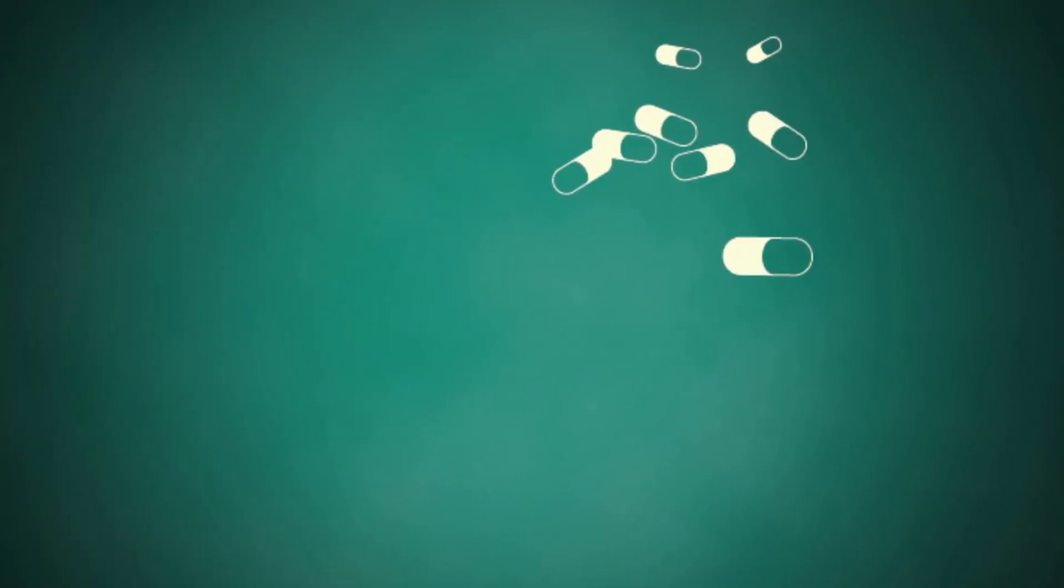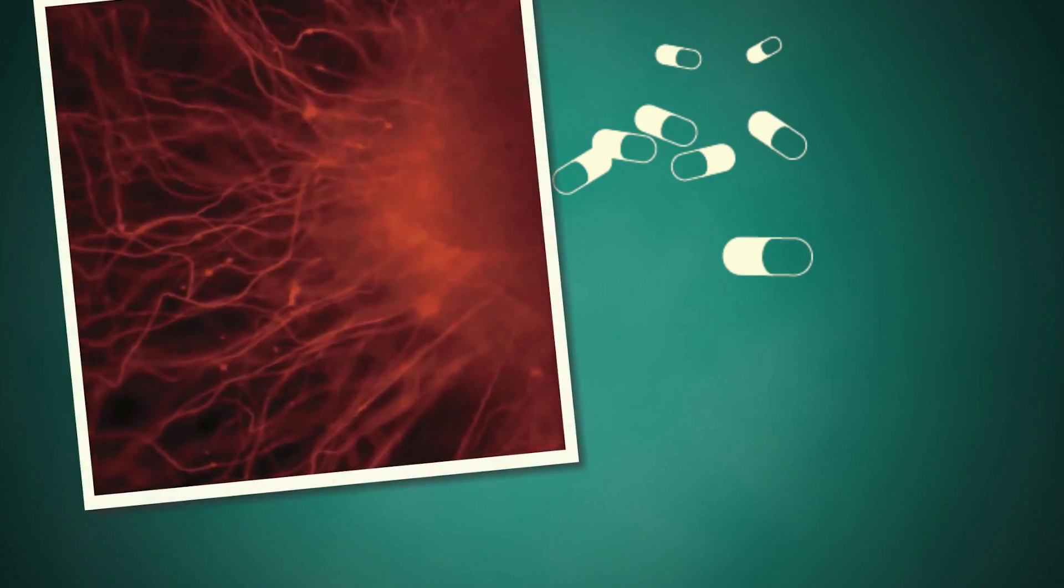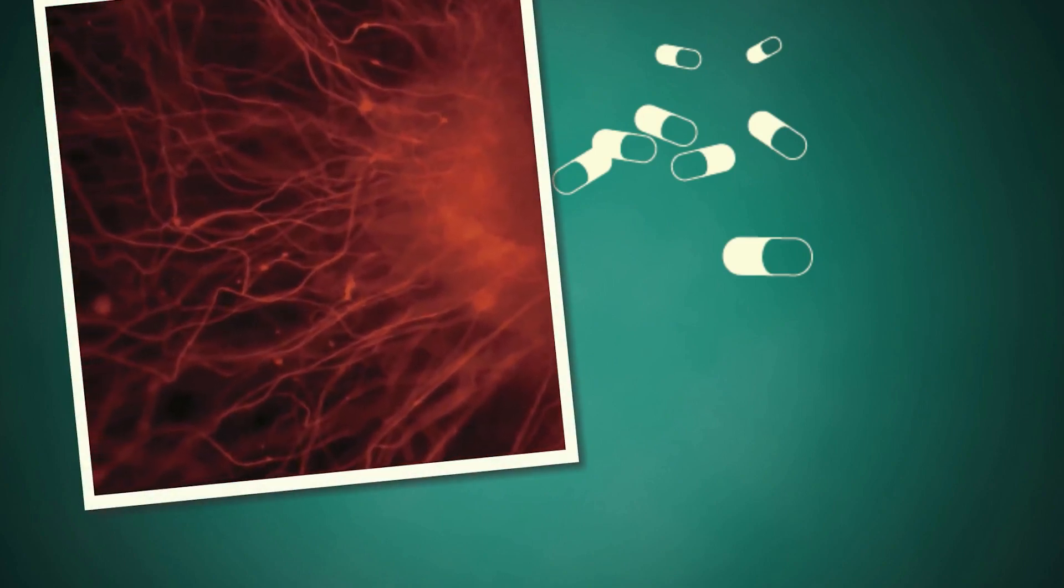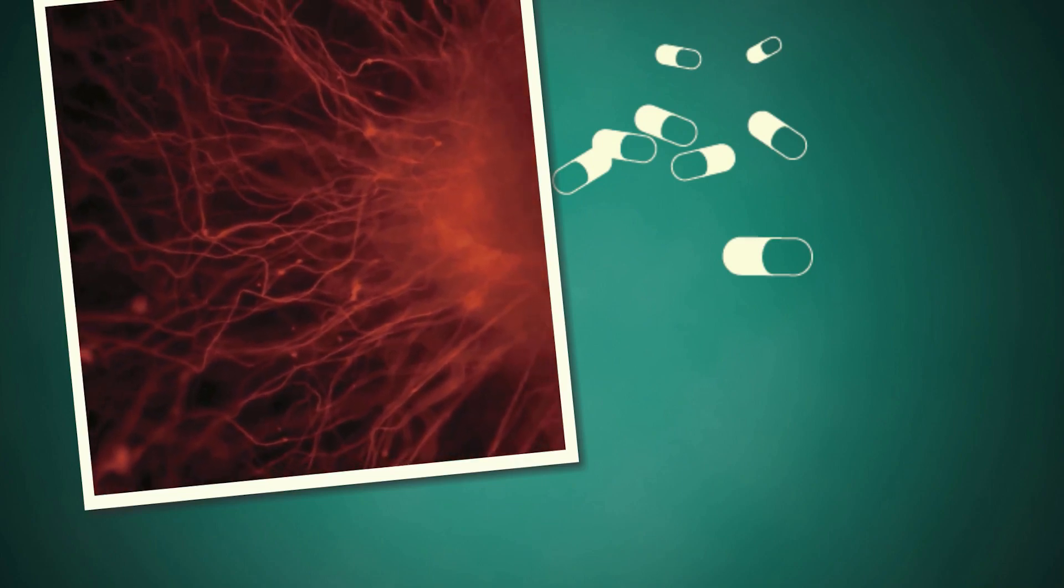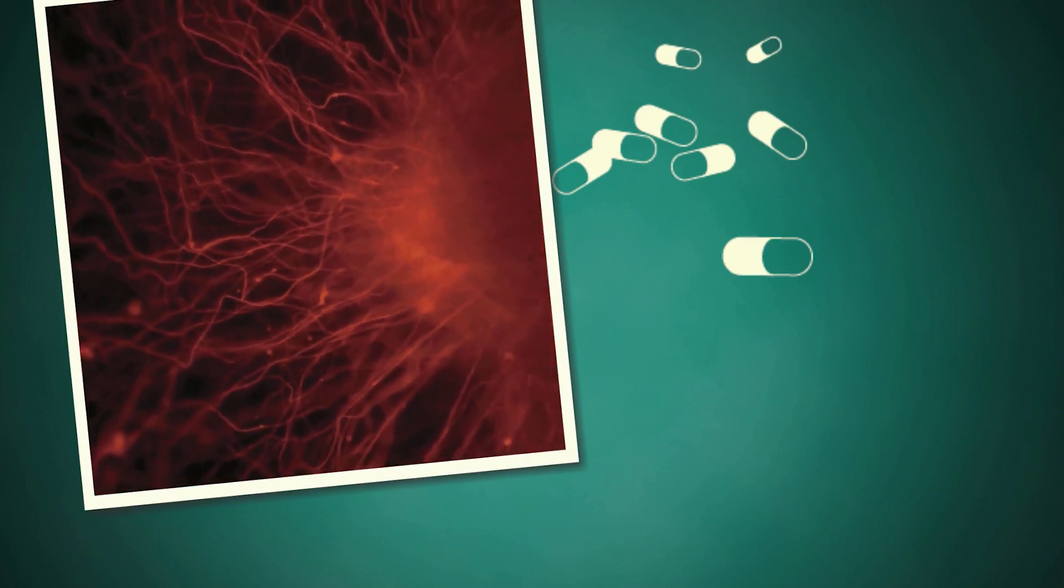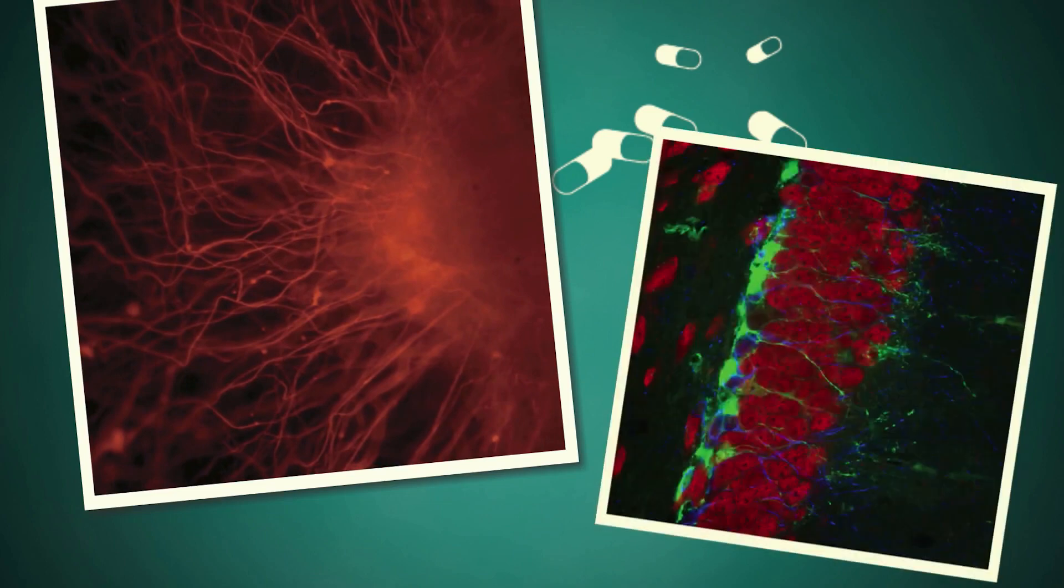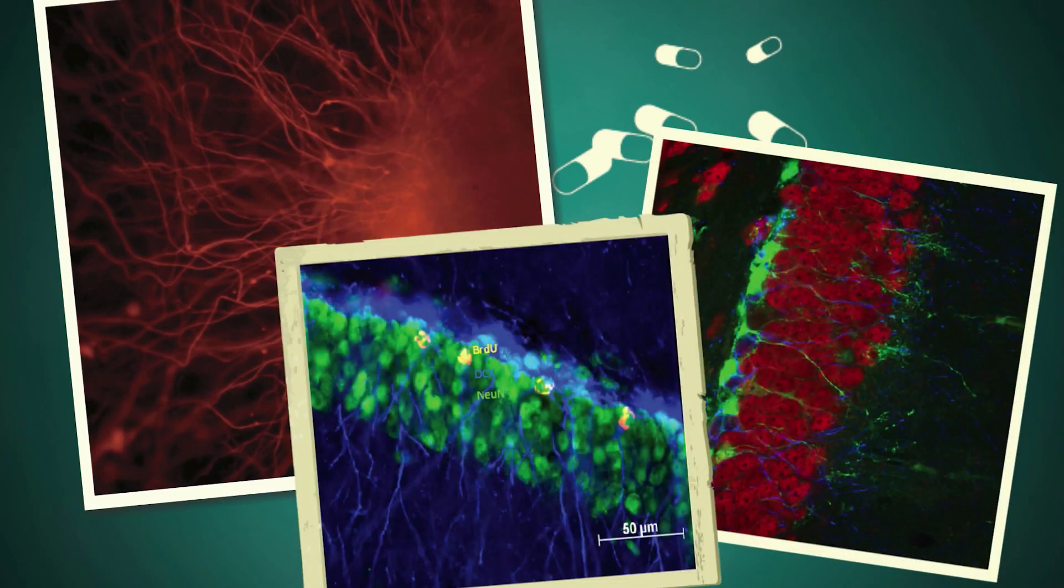Some existing drugs may already be activating stem cells. A few antidepressant medications stimulate the growth of new neurons in the brain, and these neurons most likely originate from stem cells. Scientists may be able to develop new drugs that will activate other types of stem cells to heal damaged tissue.